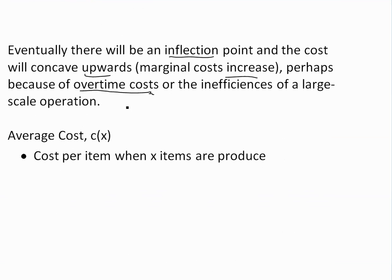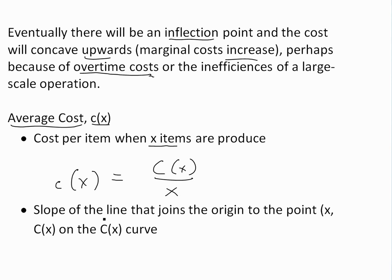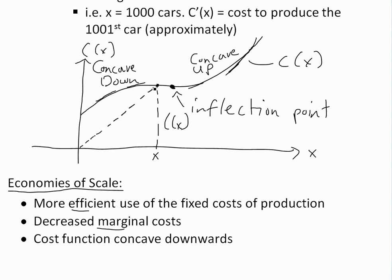Now let's look at average cost. The average cost is basically cost per item when X items are produced. We write it as lowercase c of x, and it's just the total cost function C of X divided by X. An interesting point is that this is just the slope of the line joining the origin to the point (x, C(x)) on the cost function. So at a given point x with value C(x), the slope — rise over run — gives you the average cost.